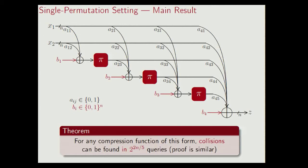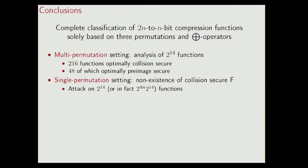So this was the main result for the single permutation setting. To conclude, what we essentially did is give a complete classification of all 2N to 1N bit compression functions that are solely based on three permutations and XOR operators. The basis of the work is the definition of equivalence classes, which reduced the amount of work to be done. For the multi-permutation setting, we analyzed 2 to the power 14 functions, and with relatively little work we proved 216 of them optimally collision secure, and 48 of which we additionally proved optimally pre-image secure.